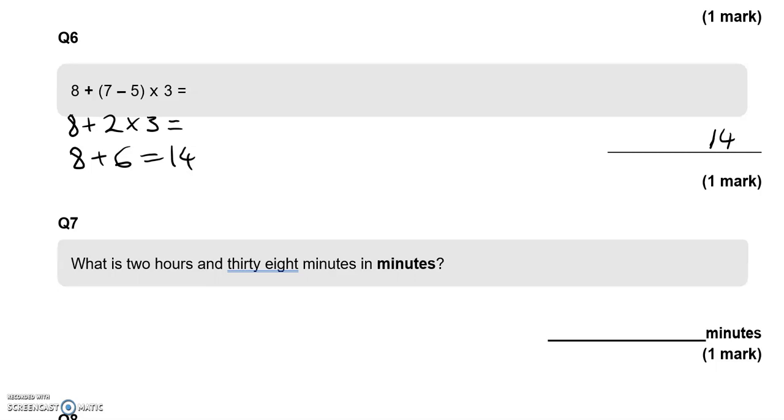What is 2 hours and 38 minutes in minutes? Let's do 2 hours first. In minutes, that is 60 and 60, 120 minutes. Then we've got 38 minutes, so 158 minutes in total.